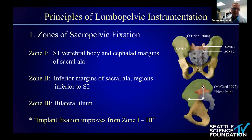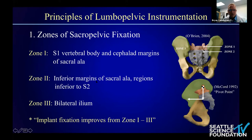Moving to the principles of lumbopelvic fixation, the first was described by O'Brien in 2004 — the zones of sacral pelvic fixation. Zone one is the S1 vertebral body and the sublateral margins of the sacral ala. Zone two works inferiorly on the margins of the ala and regions inferior to S2. Zone three is the iliac wings bilaterally.